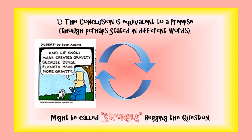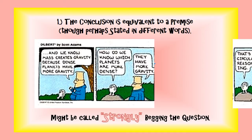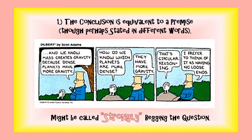For example, if we say we know that mass creates gravity because dense planets have more gravity — well, how do you know which planets are more dense? Dilbert says they have more gravity. That's circular reasoning, and Dilbert says he prefers to think of it as having no loose ends. This is a case of strongly begging the question.